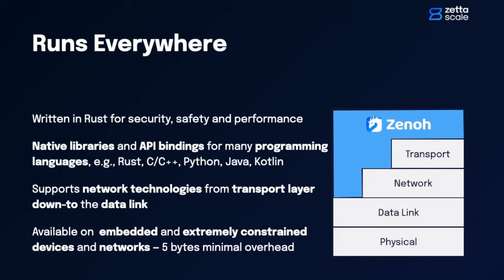Another very interesting thing about Zeno is that in order to minimize overhead and maximize performance, the protocol has been designed to be able to run starting from the data link layer going upward. That means we can run on top of a serial link, we can run over OpenThreadX, but we can equally run on UDP/IP, TCP/IP, and so on and so forth.